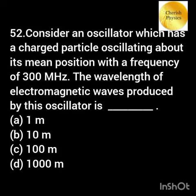An oscillator oscillates about its mean position with a frequency of 300 megahertz. The wavelength of electromagnetic waves produced by this oscillator is?